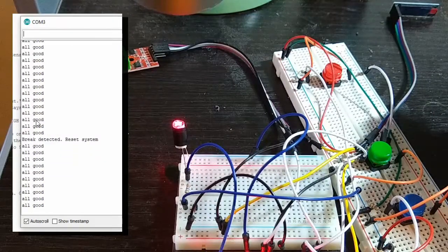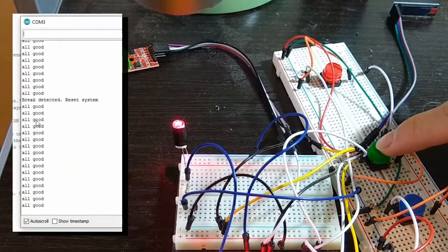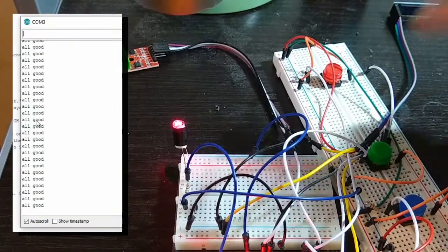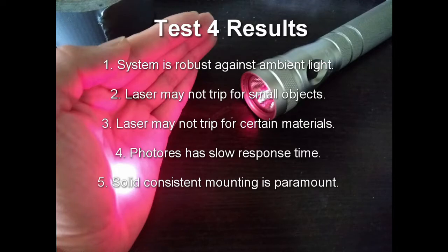Additionally, with the laser active, we can try to press the reset button and nothing will happen. All right, test four was a success. The laser is definitely more robust against ambient light pollution. However, there are some drawbacks. The laser will not trip for certain small objects such as a very, very thin pencil. If it doesn't cover the photoresistor completely, you may have some inconsistent readings.